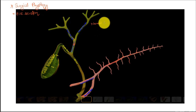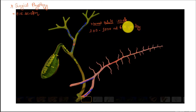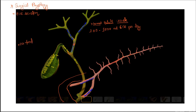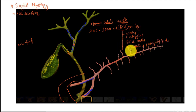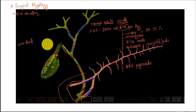Moving on to surgical physiology: bile secretion in a normal adult is 250 to 1000 milliliters per day. When there is no food, bile goes to the gallbladder rather than the duodenum. The components of bile are water, electrolytes, bile salts, cholesterol, phospholipids, and bile pigments. The functions of bile salts include digestion of fat, digestion of fat-soluble vitamins A, D, E, and K, and some immunological functions. About 80 to 90 percent of the constituents is water.